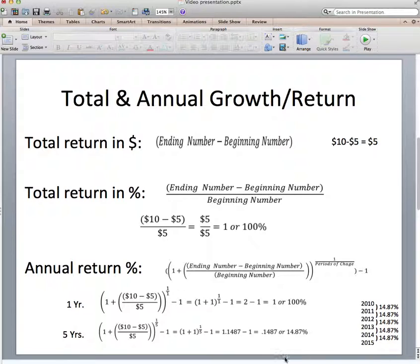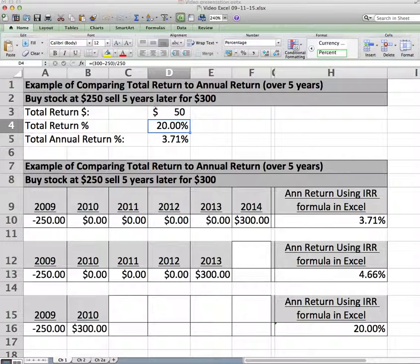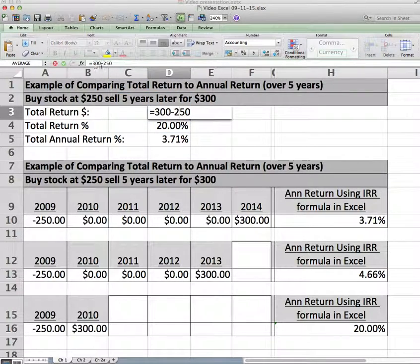Now we're going to look at how we do this in Excel. So here's a different example. Again, over 5 years, say we buy a stock for $250 and sell it 5 years later for $300.